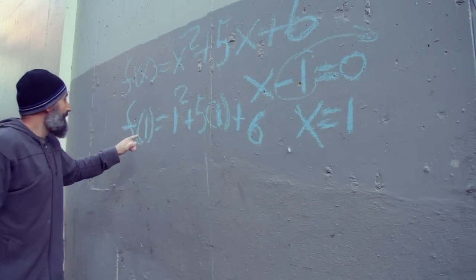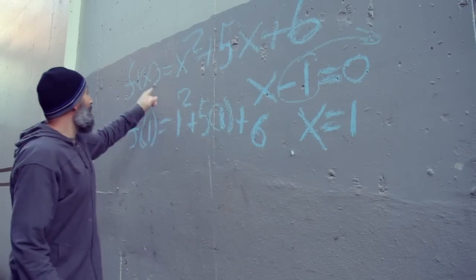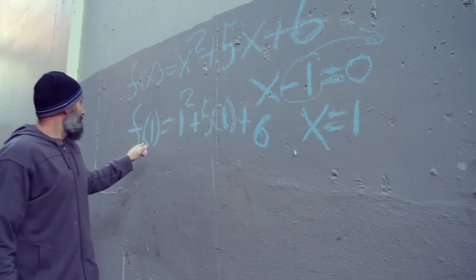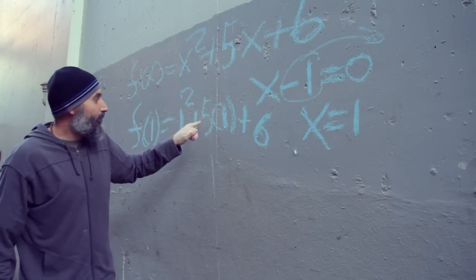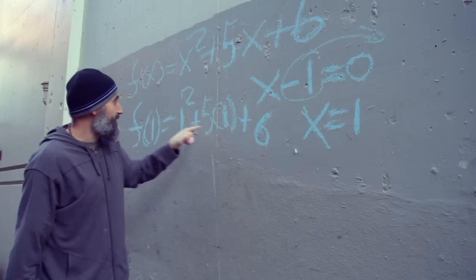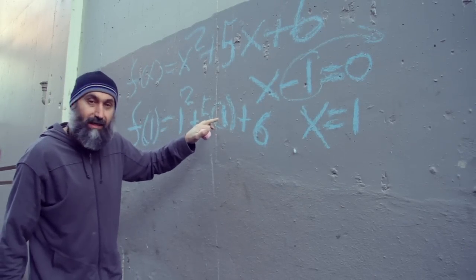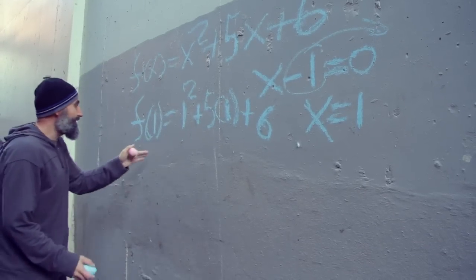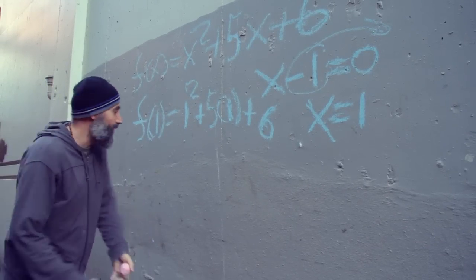So what you're doing is subbing in X is equal to 1 wherever you see X in the function. This becomes F of 1 is equal to 1 squared plus 5 times 1 plus 6. 1 squared is 1, 5 times 1 is 5, plus 6, it equals 12. So this becomes F of 1 is equal to 12.